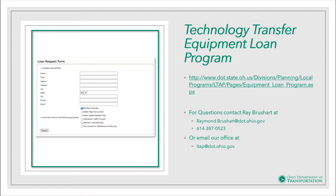How does the Equipment Loan Program work? Requests are accepted by phone, email, or online and are on a first-come, first-served basis. If the equipment is not available when your request is received, you will be added to a waitlist and notified when it becomes available. All equipment is available to local public agencies for a maximum of three weeks. If the agency wishes to continue use of the equipment, they will need to submit another request. Equipment will only be reissued for an additional three weeks if another agency is not on the waitlist.